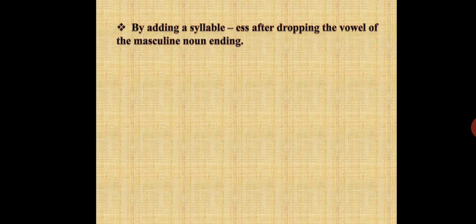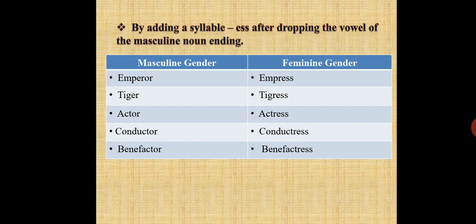Second rule: by adding the syllable '-ess' after dropping the vowel of the masculine noun ending. Masculine gender — emperor, feminine gender — empress. Similarly, tiger — tigress, actor — actress, conductor — conductress, benefactor — benefactress.